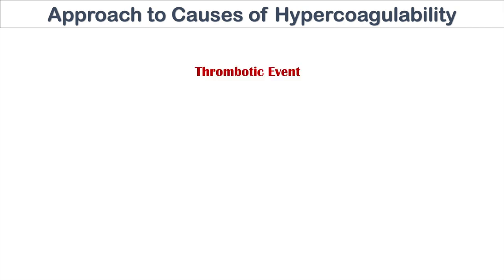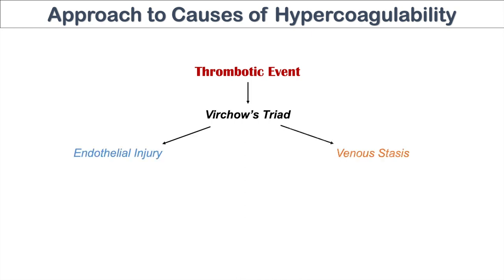In the event of a thrombotic event — which could be a deep vein thrombosis, a pulmonary embolism, or some other thrombus in a different area in the body — we have to think about Virchow's triad. Virchow's triad has three components: endothelial injury, venous stasis, and hypercoagulability. Immobility, for example, can cause deep vein thrombi and even pulmonary emboli. But the topic of this lesson is hypercoagulability, which I'll focus on here, covering the other components of Virchow's triad in another lesson.